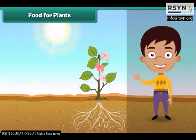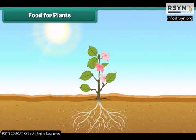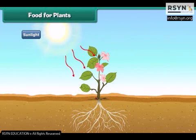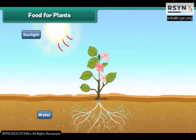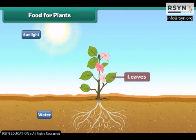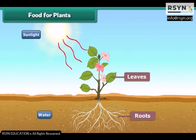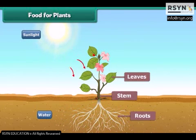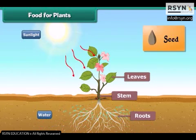Let us now understand where plants get their food. Plants make their own food with the help of sunlight. Plants take water from the soil and prepare food in their leaves. The plant takes up some part of food and the rest is stored in its roots, stem, leaves and seeds.